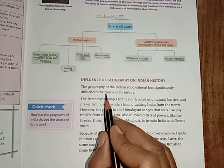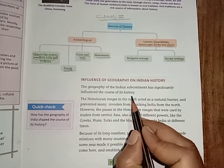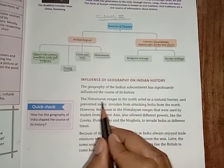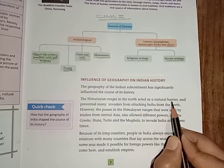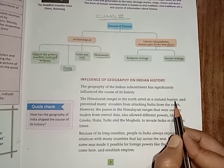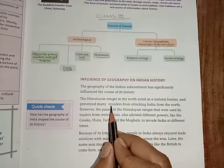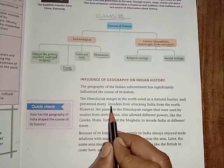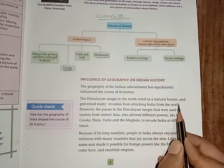The Himalayas in the north acted as a natural barrier and prevented many invaders from attacking India from the north.